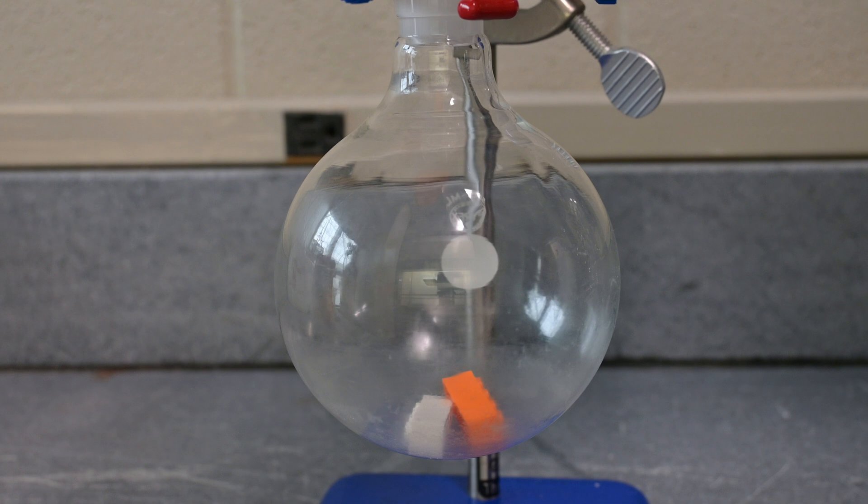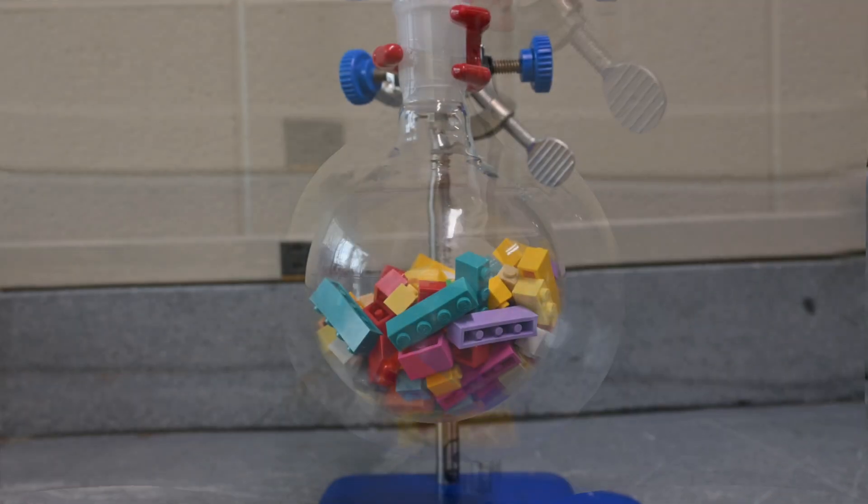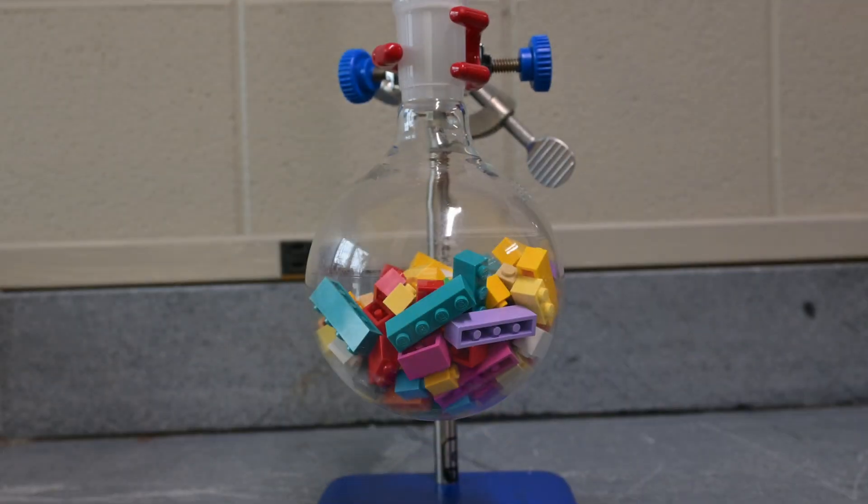First, the lego bricks were loaded into a round bottom flask. Normally you wouldn't want to fill a flask past its halfway point, but since legos are mostly air, they'll shrink down significantly as they melt.